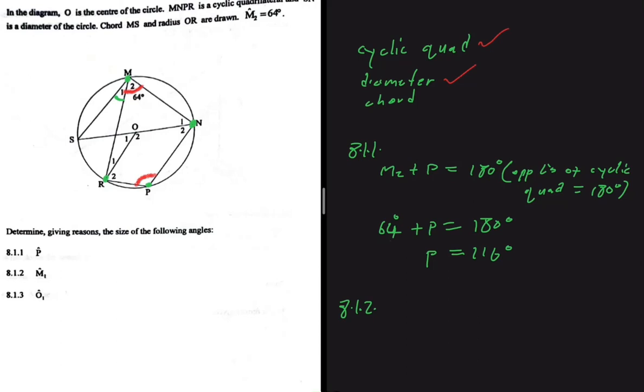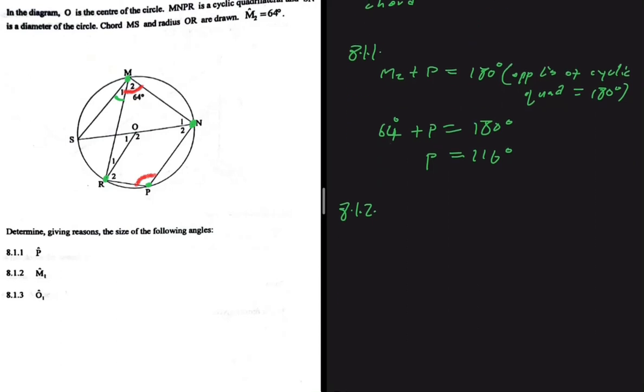So now we're saying that M1 plus M2 should be equals to 90 degrees. Why are we saying that it should be close to 90 degrees? Because it's being subtended by a diameter.